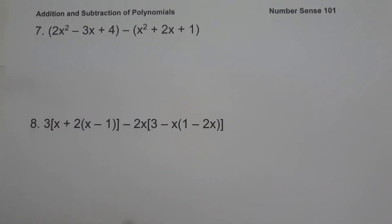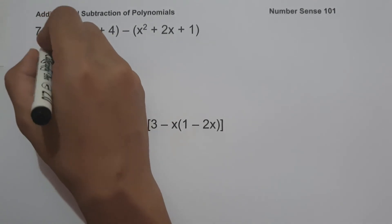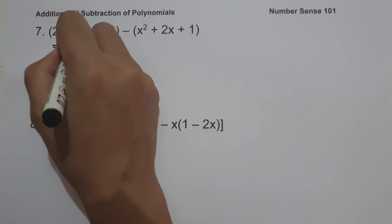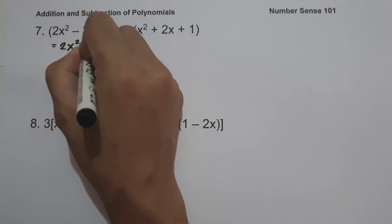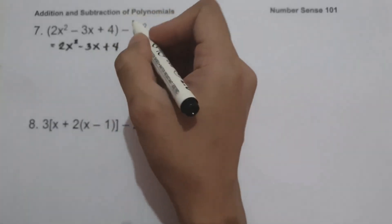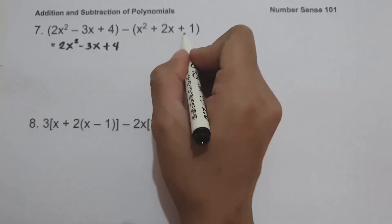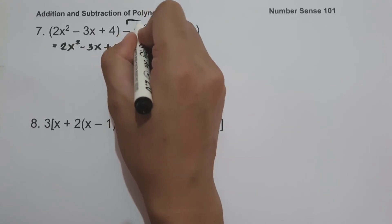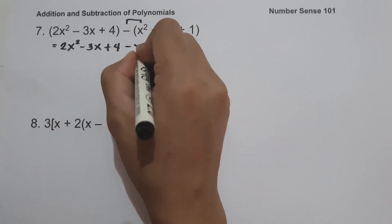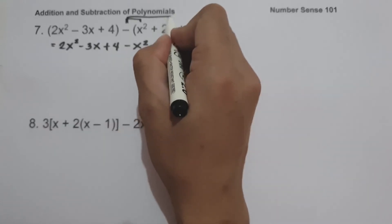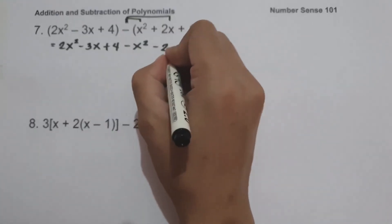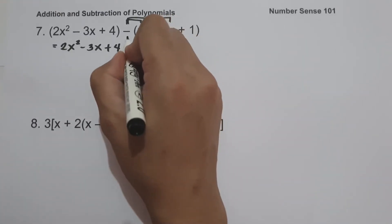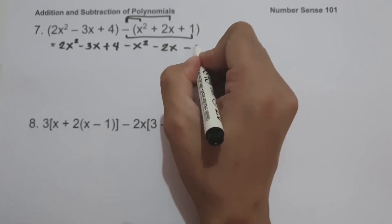On example number 7, we have the quantity 2x squared minus 3x plus 4, minus the quantity x squared plus 2x plus 1. So let us write this as 2x squared minus 3x plus 4, and distribute the negative sign inside the parenthesis: negative multiplied by x squared is negative x squared, negative multiplied by 2x is negative 2x, and negative multiplied by 1 is negative 1.